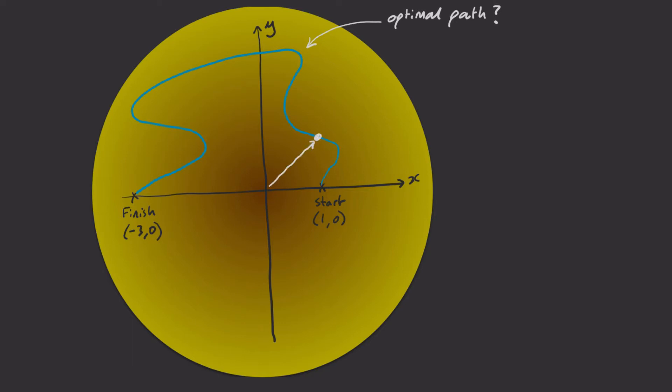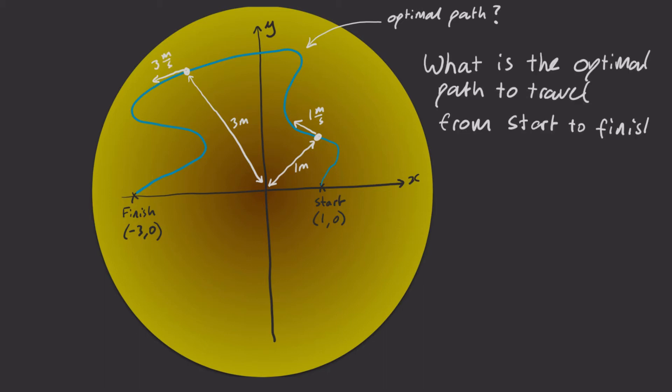Your speed you can run at gets larger based on how far away you are from the pit's center. For example, if you are 1 meter away from the pit, then you can run at a speed of 1 meter per second in whatever direction you choose. But if you find yourself 3 meters away from the pit center, you can run at a speed of 3 meters per second. Can you solve it?